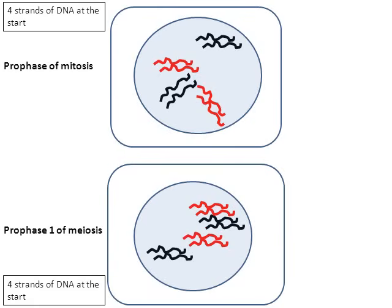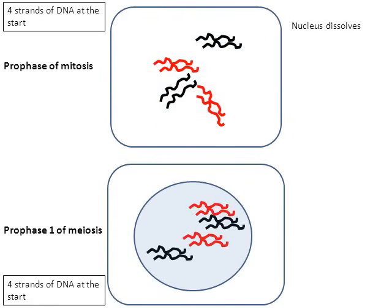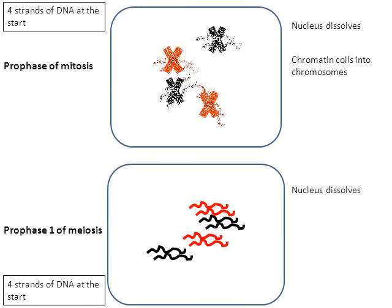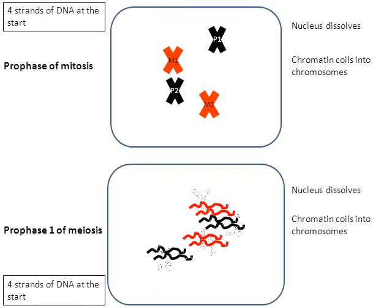Now we're going to move on to the step known as prophase. Looking at the cell on top, it's going to go through the prophase stage of mitosis. The nucleus is going to dissolve — you see the blue circle disappearing. The bottom cell is also going to lose its nucleus as it goes through prophase number one of meiosis. In the top cell, the chromatin strands that were just duplicated are going to coil into chromosomes. In the bottom cell, during prophase number one of meiosis, the same thing happens — the chromatin is going to coil into chromosomes.